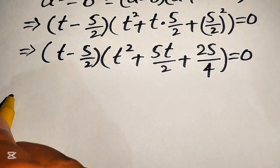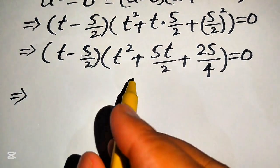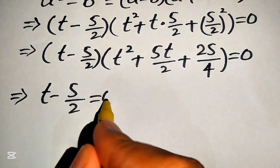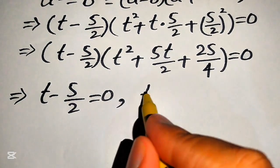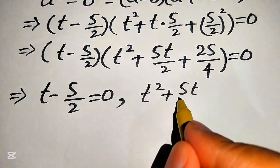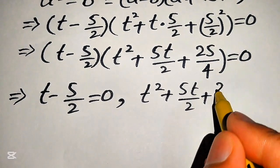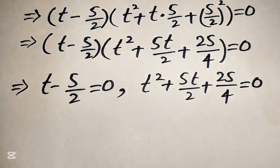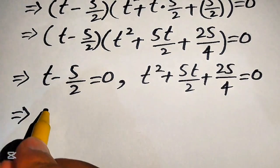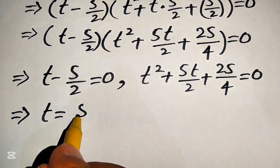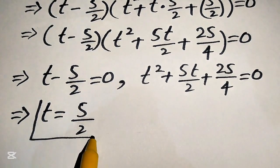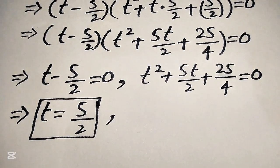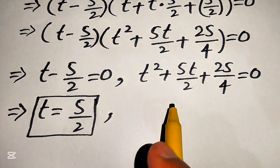So the full factored equation equals 0. We split it into two cases. Case one: t minus 5 over 2 equals 0, giving t equals 5 over 2. This is our first real solution. Case two: t squared plus 5t over 2 plus 25 over 4 equals 0, which we solve as a quadratic equation.